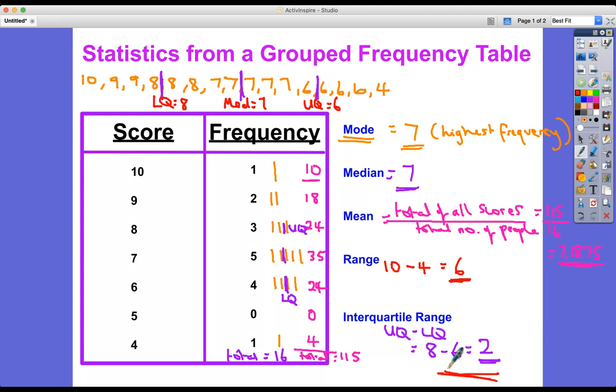So to find the interquartile range, we did upper quartile minus lower quartile, which is eight minus six, which equals two. So I hope that that is a nice clear example of how to find statistics from a grouped frequency table.